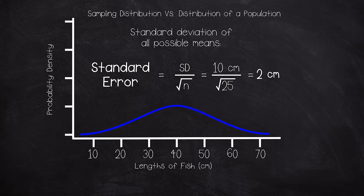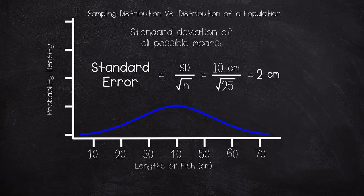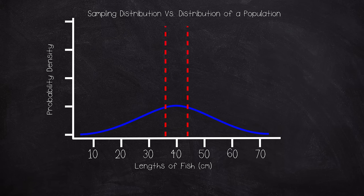And this tells us, typically, how far the mean length of a sample of 25 fish deviates from the true mean. So typically, we're going to end up with a sample mean about 2 cm away from the true mean of 40. Even without Neptune, we have an idea of how close our estimate will be to the true value.